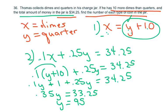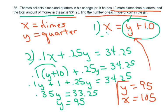So if your quarters is 95, then you just substitute this back in. Then your dimes would be 105, because you just add 10 more dimes than quarters. Alright, and that's your answer.